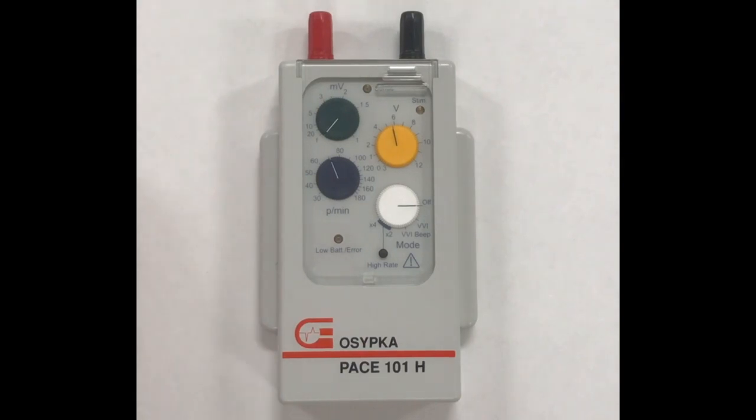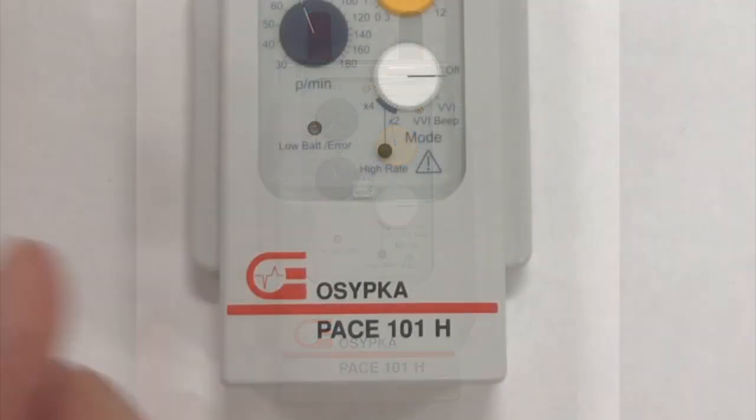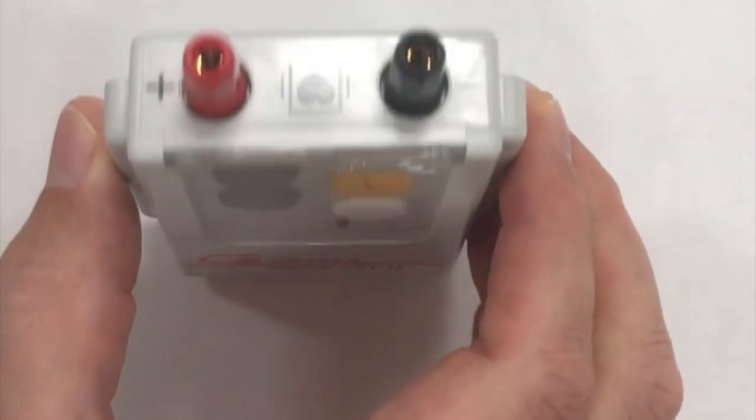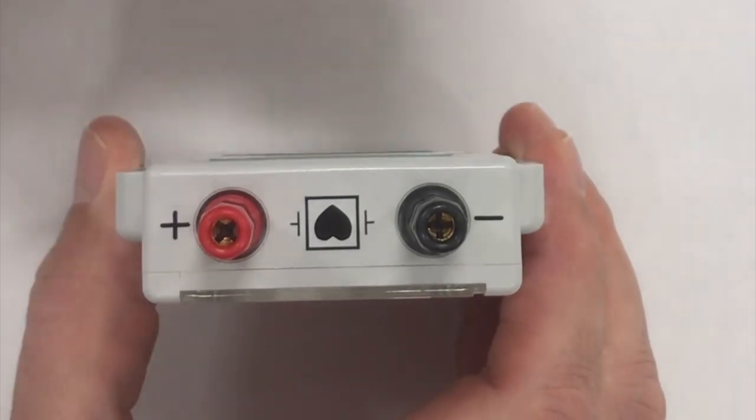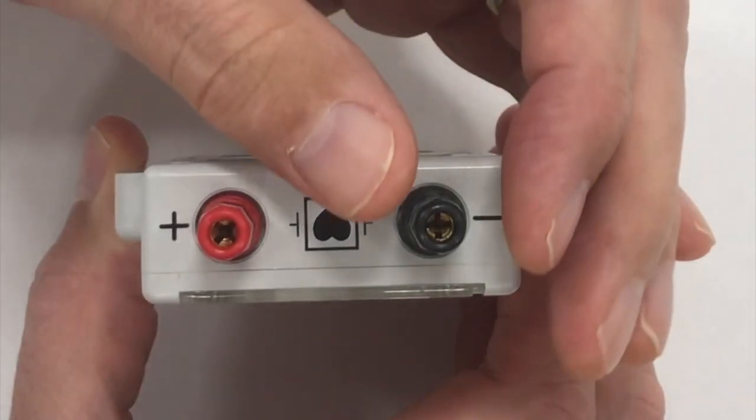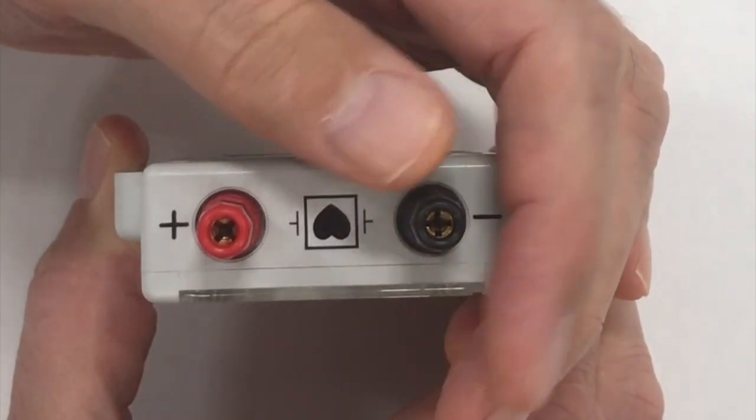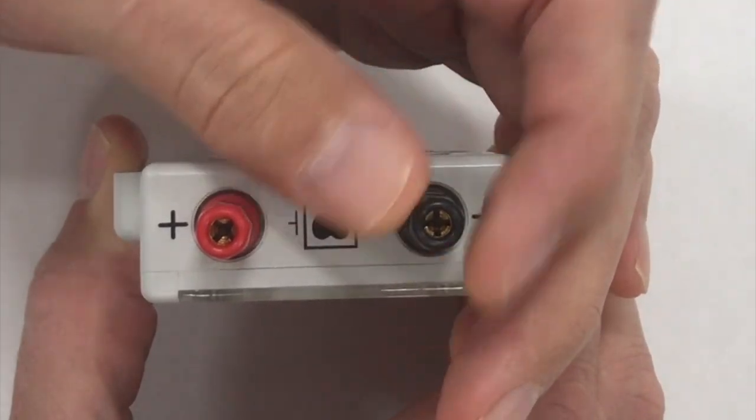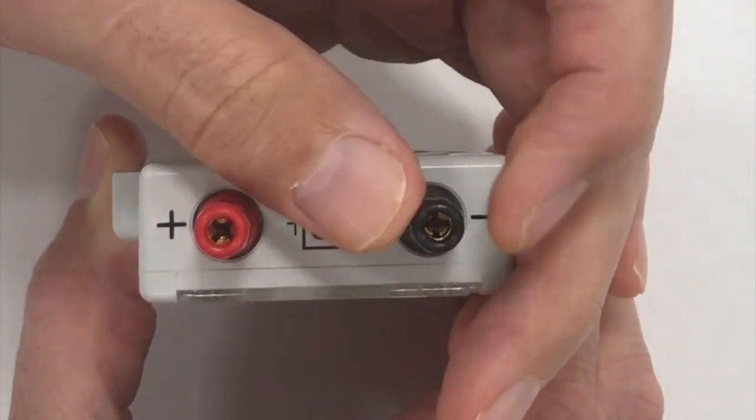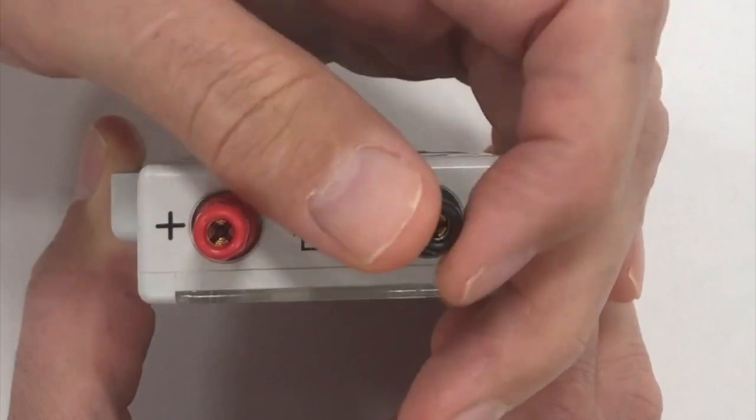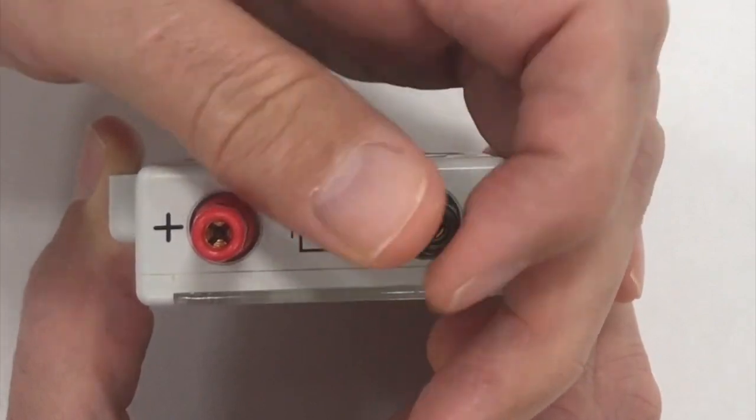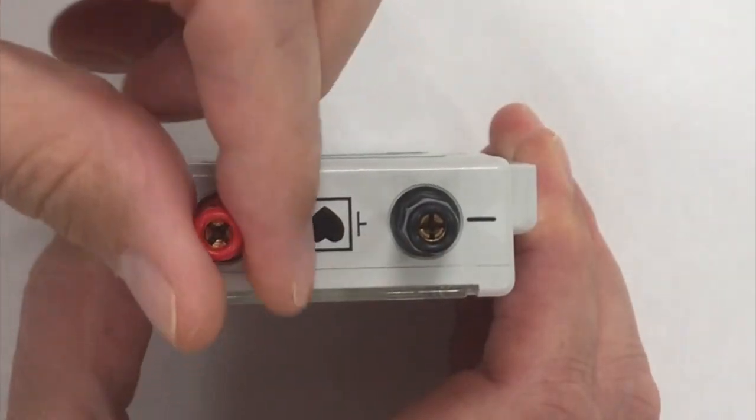To attach cables to the Pace 101, the top of the device has what's called rotating collets. That means when you rotate a barrel, it closes some jaws around a pin. And the pin it accepts is anything from 0.9 to 2mm.